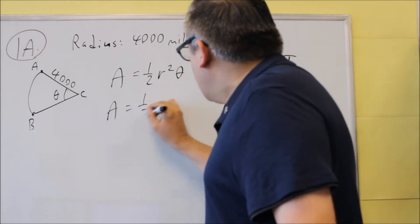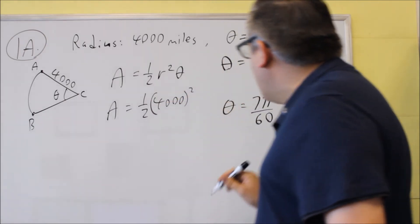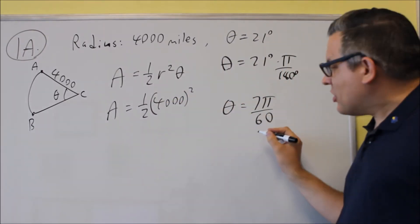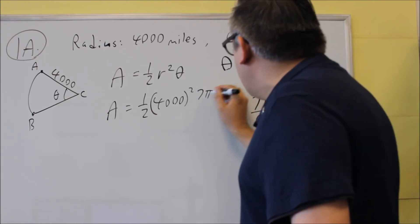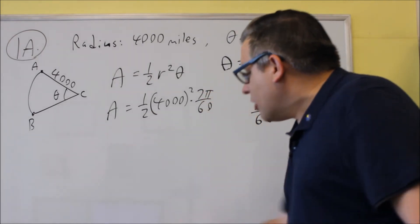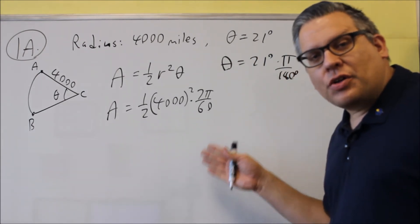You're going to take the radius, which is 4,000, and you're going to multiply it by the same theta that we have here. So we're going to use 7 pi over 60 to put that in. So again, we're using the same theta that we had before. It must be in radians. We're going to square this and multiply it all together.